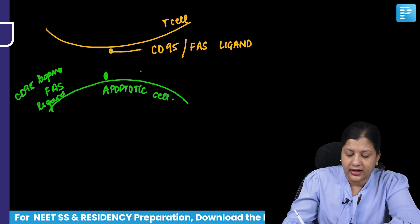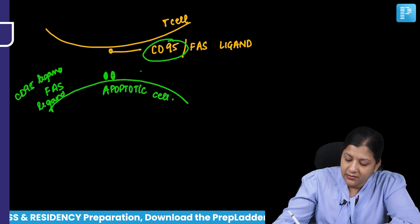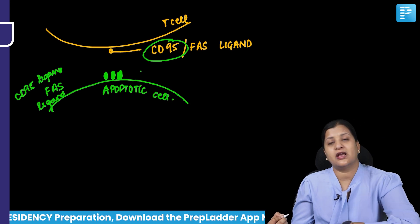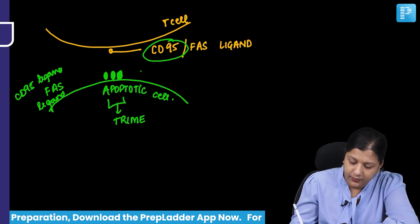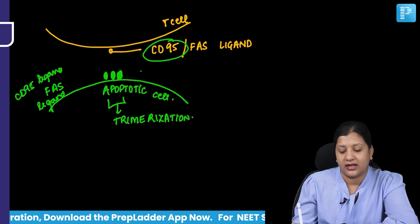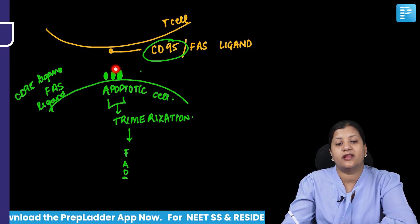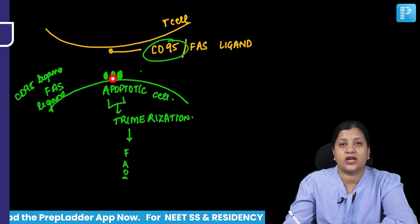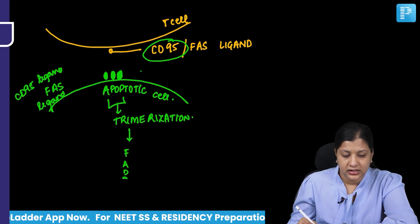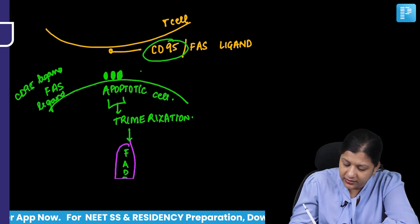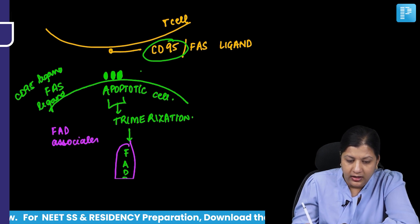When there is an interaction or activation of CD95, you will see that there is a trimerization happening in the apoptotic cell. This process is called trimerization. This trimerization will activate an enzyme called FADD. So once there is an interaction of the receptor with the ligand, it will cause trimerization, and trimerization will activate FADD.